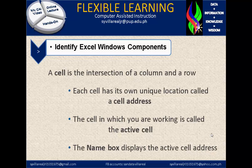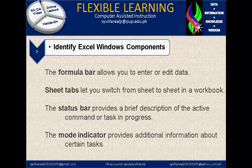A cell is the intersection of a column and a row. Each cell has its own unique location called a cell address. The cell in which you are working is called the active cell. The name box displays the active cell address. We also have a formula bar that allows you to enter or edit data.